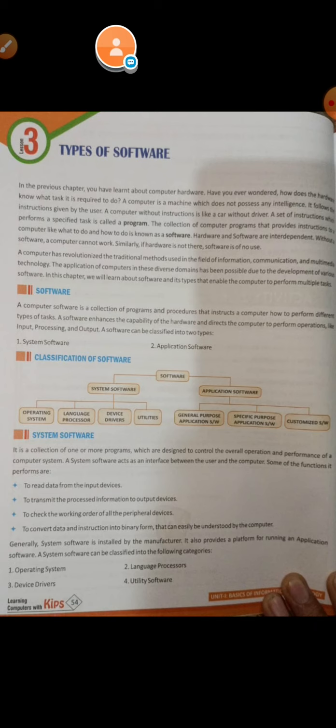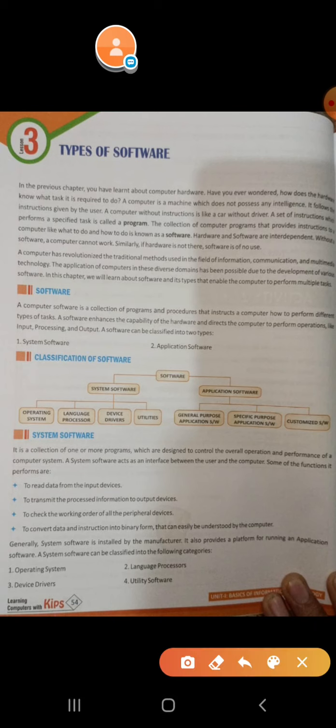The information that you have on your computer screen is called software. You have software, or a set of programs — a set of instructions that make a program — and such a set of programs is called software. A computer software is a collection of programs and procedures that instruct our computer how to perform different types of tasks. Computer software is a set of programs which gives instructions on how to perform work.